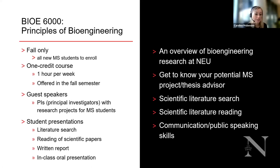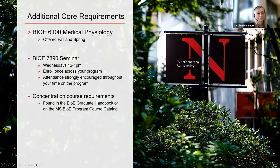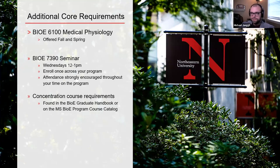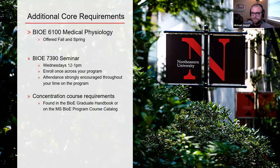A quick note: in the spring you will see BioE 7000 principles of bioengineering — that is the PhD version. The master's version in the fall is BioE 6000, so you should definitely enroll in that in the fall semester. We also have medical physiology, our second required course that all students take. BioE 6000 is fall only, but medical physiology is offered in both fall and spring. Then we have your concentration course requirements, which vary from concentration to concentration and are available in our graduate handbook or the course catalog on our website.